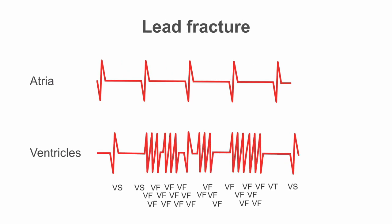A lead fracture is even harder to account for, because really it shouldn't be happening — it's not a programming fault, it's a mechanical fault. There are some things built into the device to help prevent inappropriate therapy for lead fracture, but essentially the interface at the fracture site can generate noise on the lead. That noise looks pretty similar to a ventricular event to the device; it can't tell the difference. So it starts to mark them as true ventricular events, and you can see here that this lead noise is being marked as VF events. If that continued, the device would deliver inappropriate therapy.